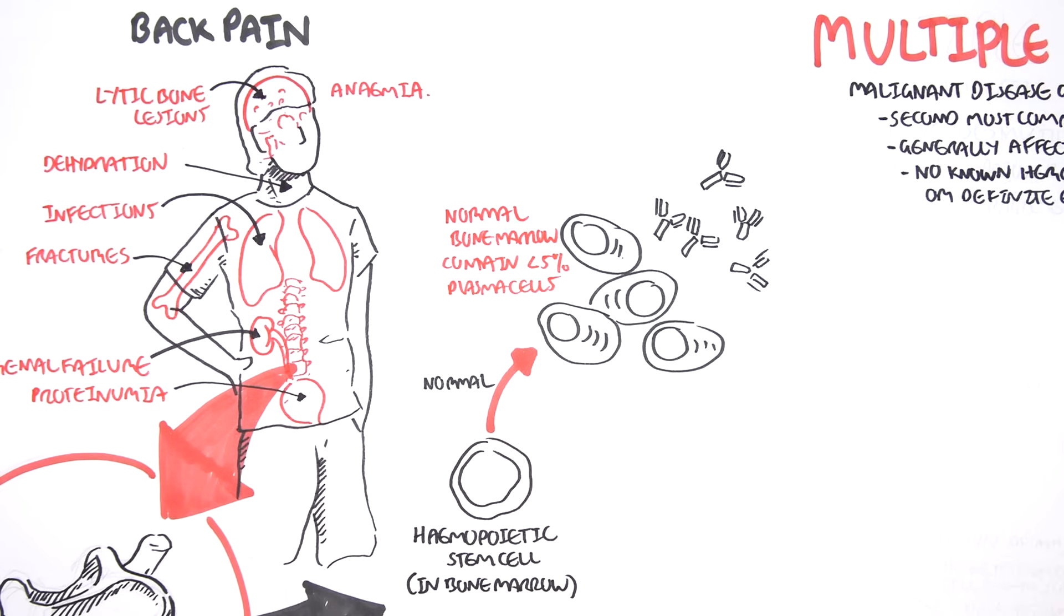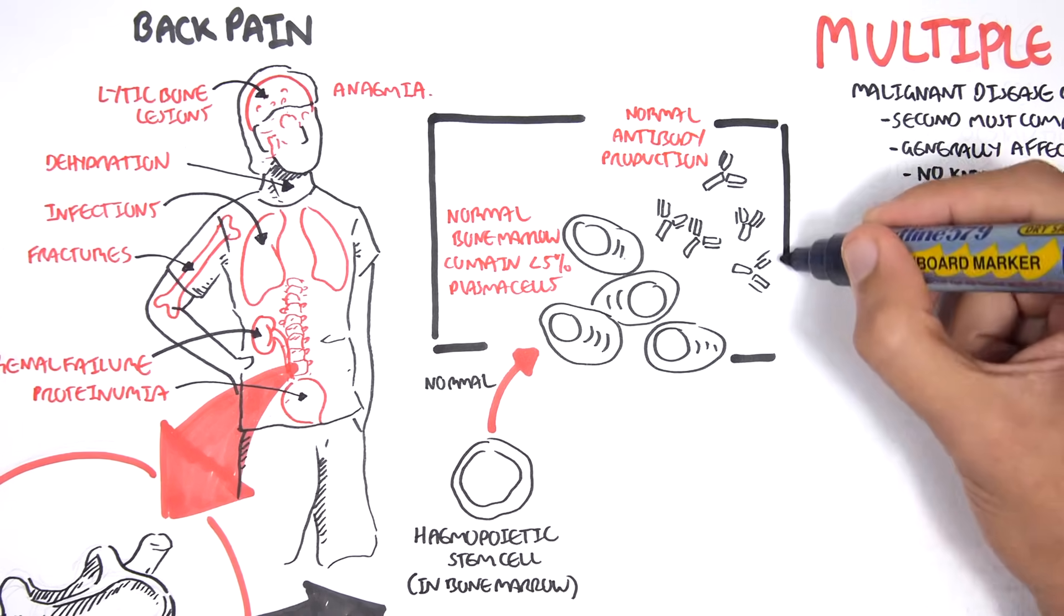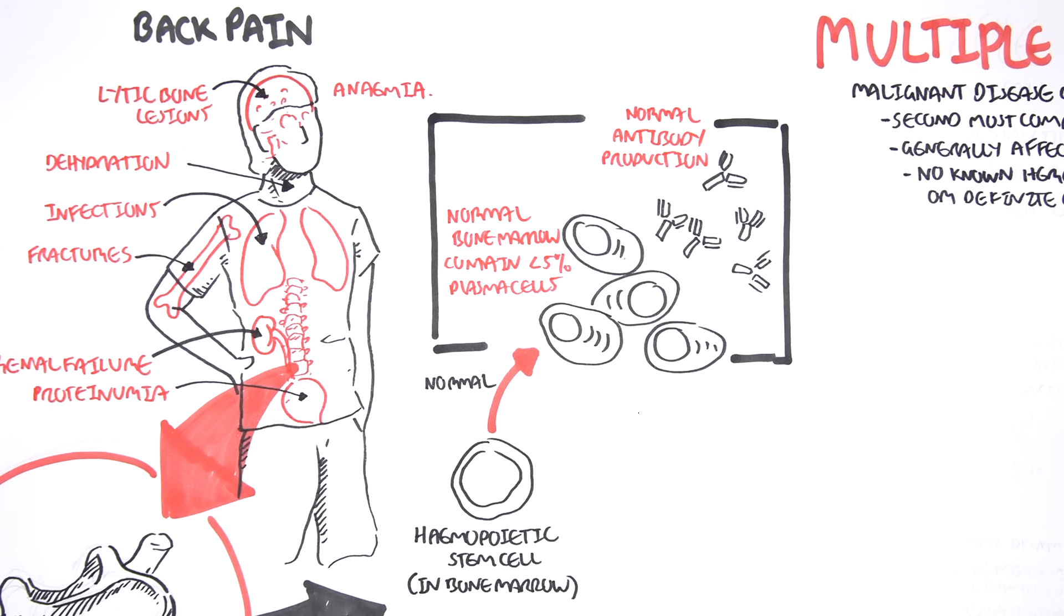These plasma cells secrete antibodies. Plasma cells secrete antibodies to help fight against infection. The antibodies secreted are normal, consisting of light and heavy chains.